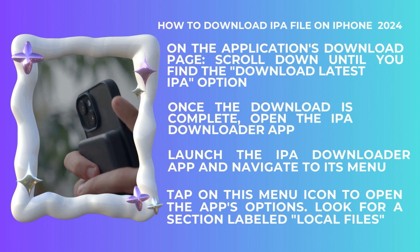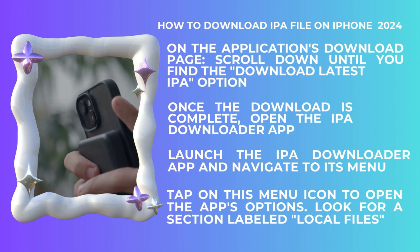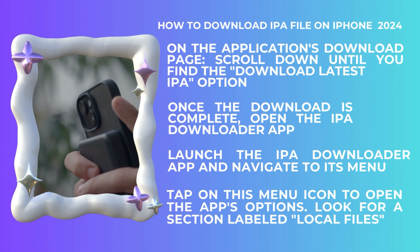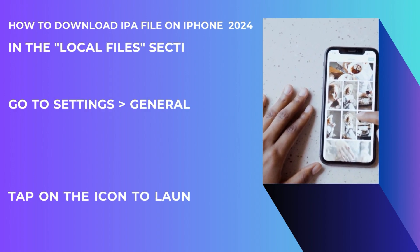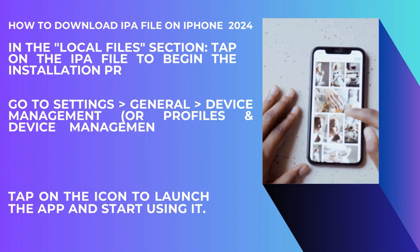Once the download is complete, open the IPA downloader app you installed earlier. Launch the app and navigate to its menu, often represented by three horizontal lines or a similar icon. Tap on this menu icon to open the apps option and look for a section labeled 'Local Files' or something similar. This section contains all the files you have downloaded using the app. In the local files section, you should see the IPA file you just downloaded.